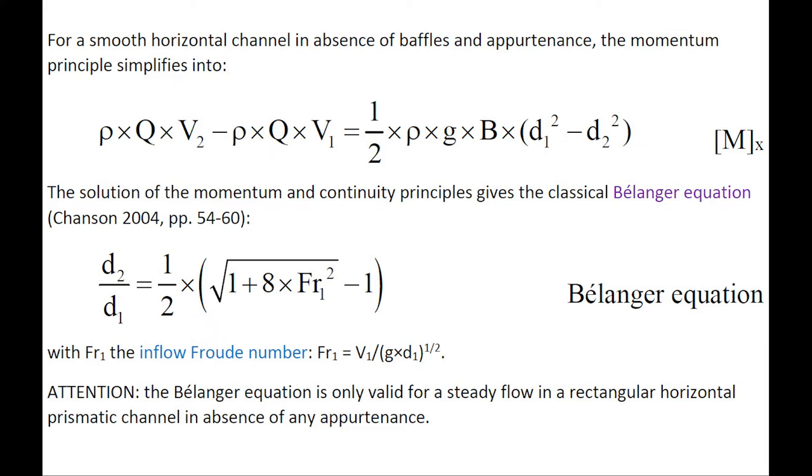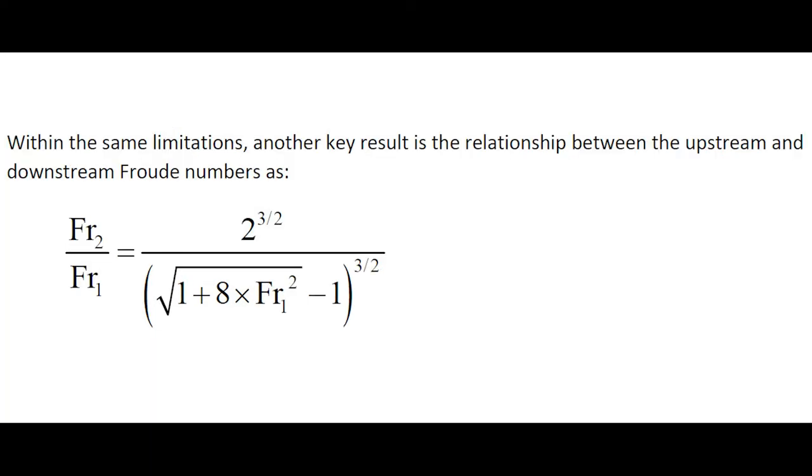Importantly, the Bélanger equation is only valid for a steady flow in a rectangular horizontal prismatic channel in absence of any appurtenance. With the same limitations, another key result is the relationship between the upstream and downstream Froude numbers.